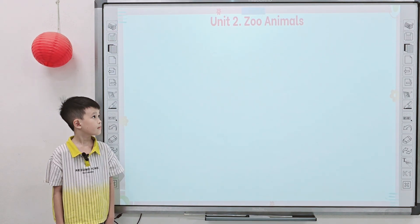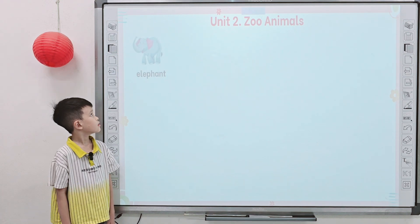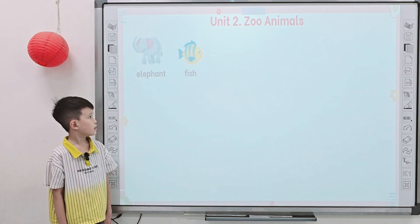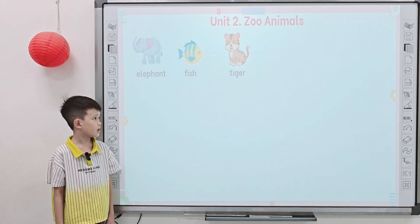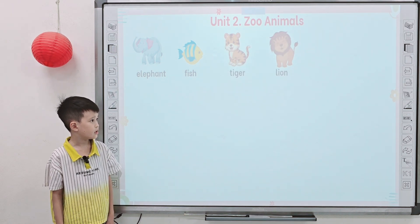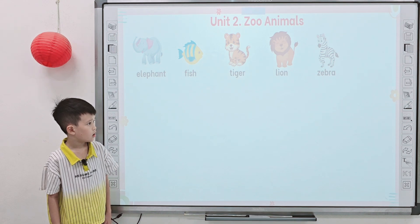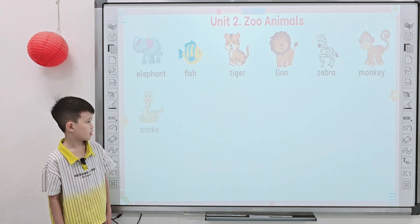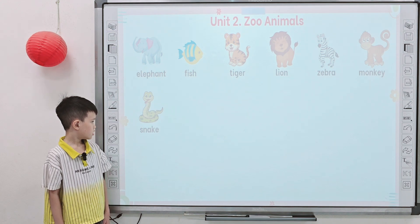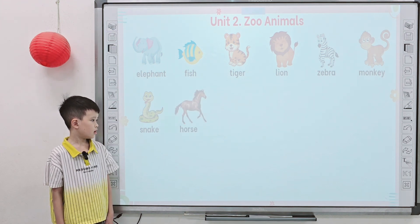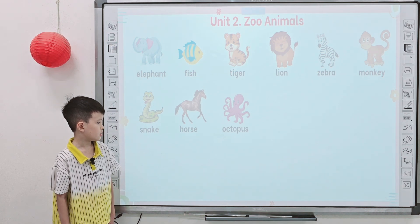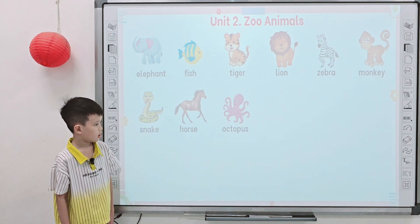Now next I'm giving zoo animals. Tell me what is it? This is an elephant. This is a fish. This is a tiger. This is a lion. This is a zebra. This is a monkey. This is a snake. This is a horse.